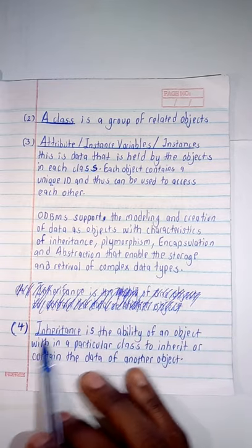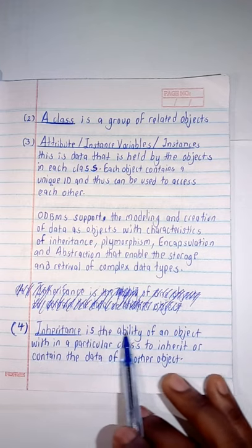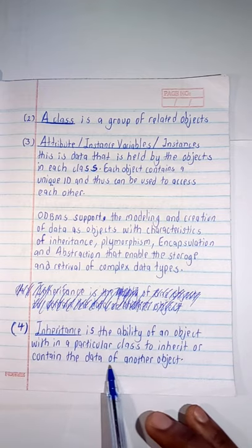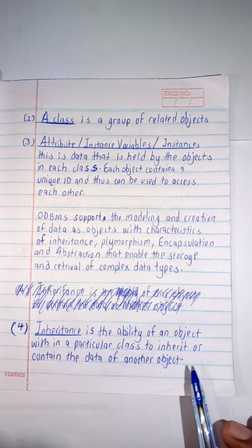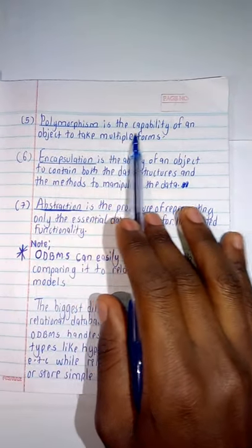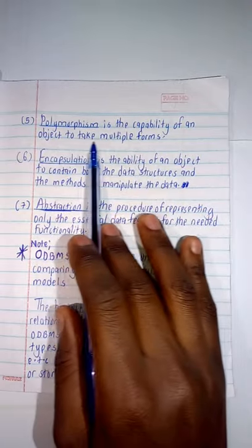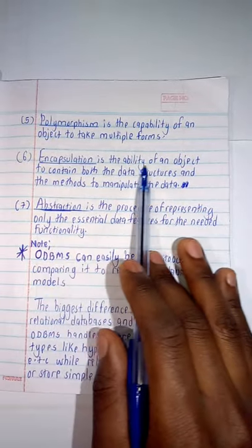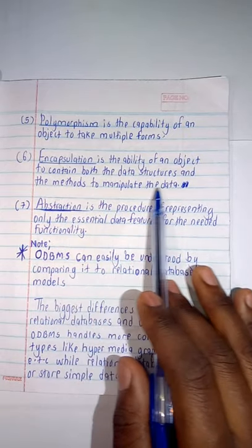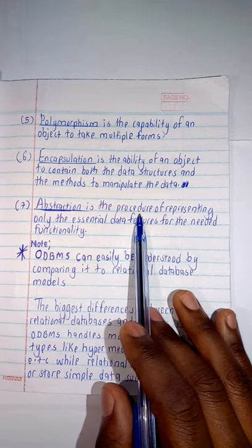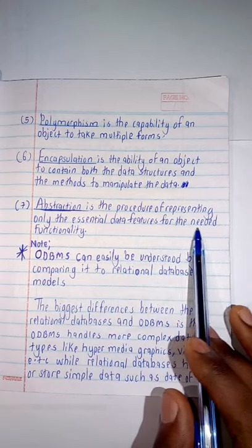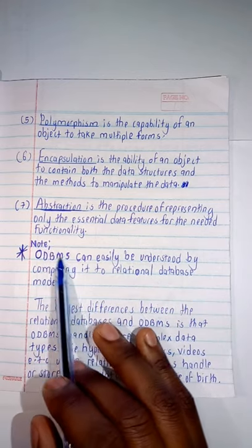Inheritance is the ability of an object within a class to inherit or contain the data of another object. Polymorphism is the capability of an object to take multiple forms. Encapsulation is the ability of an object to contain both the data structures and the methods to manipulate the data. Abstraction is the procedure of representing only the essential data features for the needed functionality.